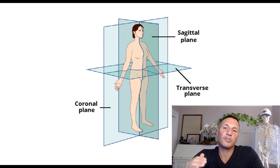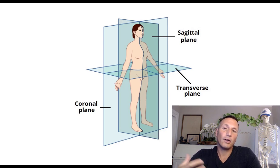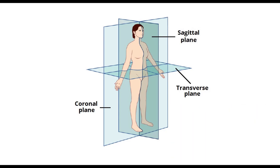You have your three primary planes of movement — the cardinal planes. You have your sagittal plane, normally referred to as the sagittal plane; your transverse plane, also referred to as the horizontal plane; and your coronal plane, referred to as the frontal plane. Those three planes — sagittal, frontal, and horizontal — capture the three-dimensional system we use to analyze, view, and assess movement.